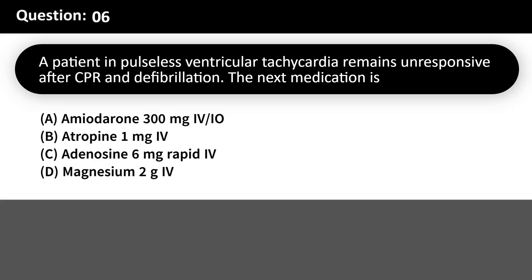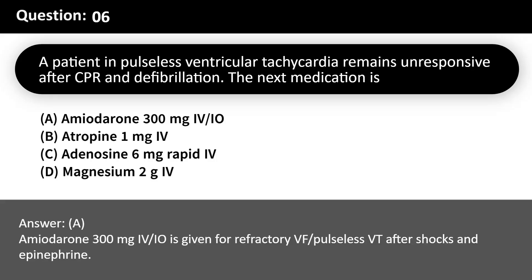A patient in pulseless ventricular tachycardia remains unresponsive after CPR and defibrillation. The next medication is: A. Amiodarone 300mg IV/IO. B. Atropine 1mg IV. C. Adenosine 6mg rapid IV. D. Magnesium 2g IV. Answer: A. Amiodarone 300mg IV/IO is given for refractory VF/pulseless VT after shocks and epinephrine.